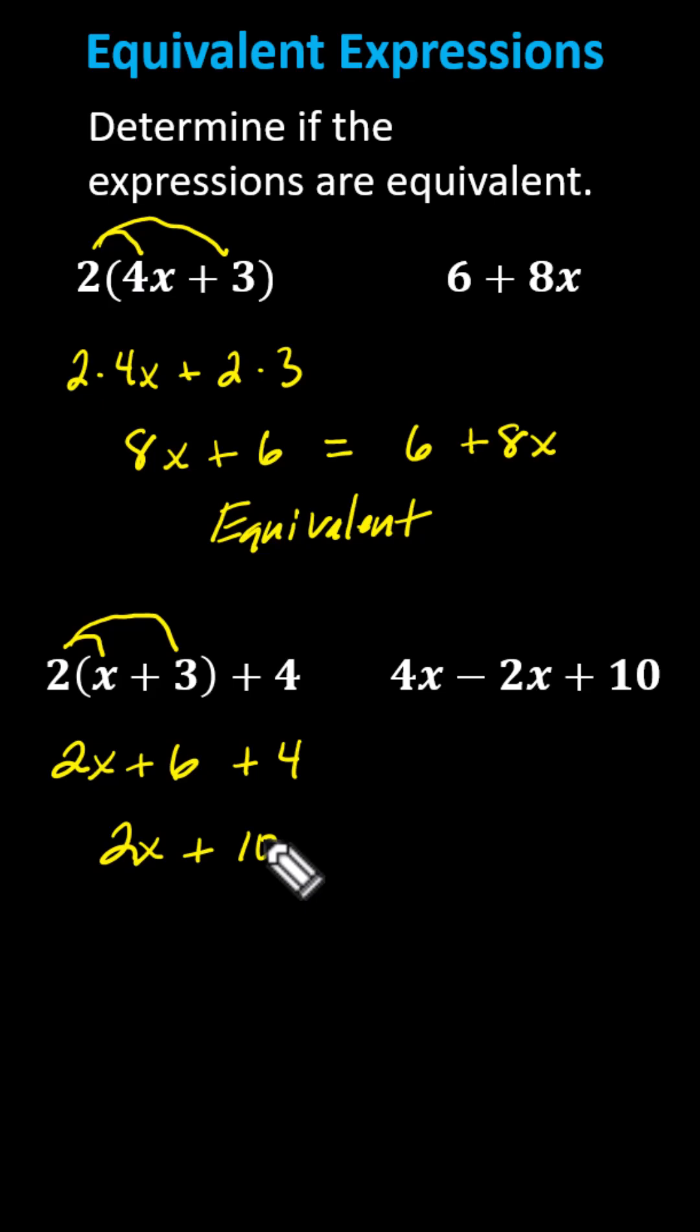And now for the expression on the right, we can combine like terms. 4x and negative 2x are like terms. Recall, to combine like terms, we add or subtract the coefficients. Because 4 minus 2 is 2, 4x minus 2x is 2x, and the expression simplifies to 2x plus 10.